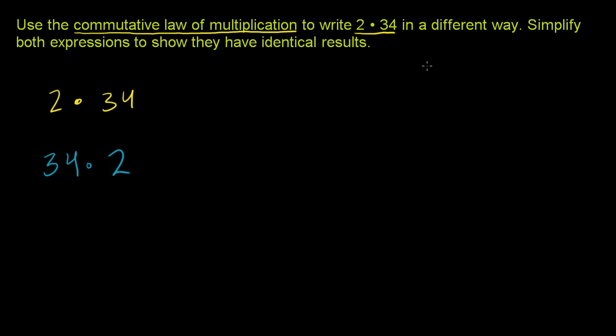And we could write it like this, literally. You'll almost never see it written like this, but it is literally 2 times 34. Almost always people write the larger digit on top, or the number with more digits on top. But let's do it this way.